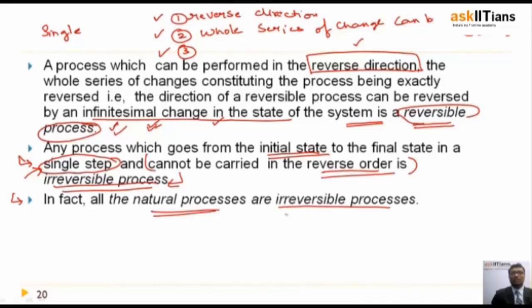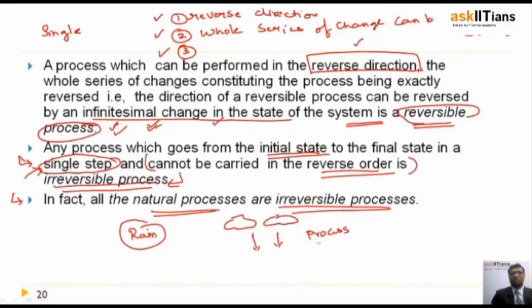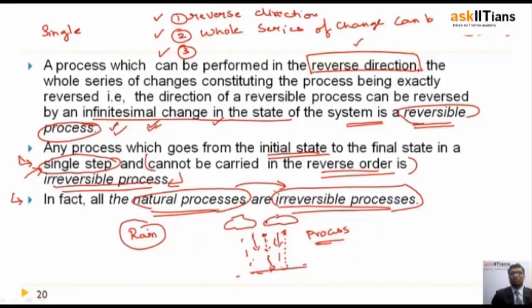The most important thing is that all natural processes are irreversible. For example, rain — if clouds give rain, this process of raining cannot be reversed. If a drop of rain falls down, you cannot take it back up to the cloud. That is why all natural processes are called irreversible processes.